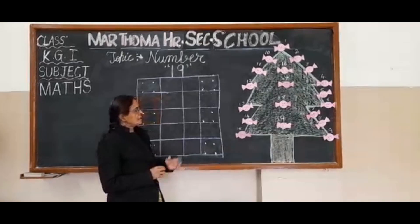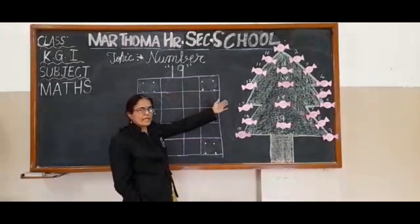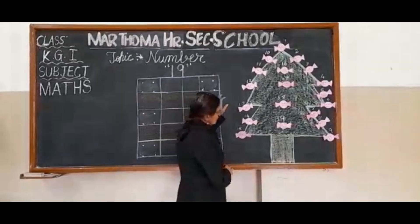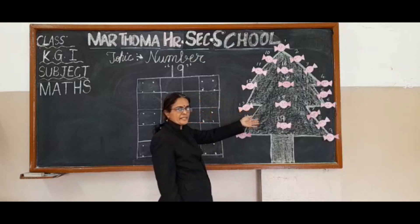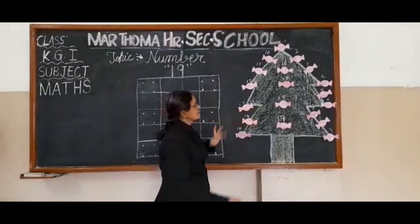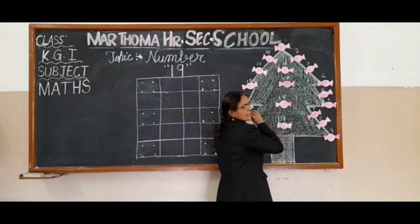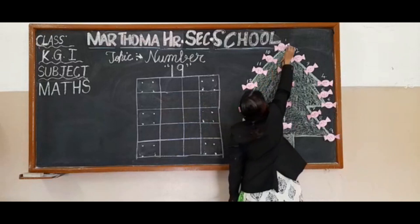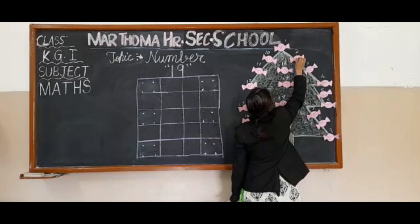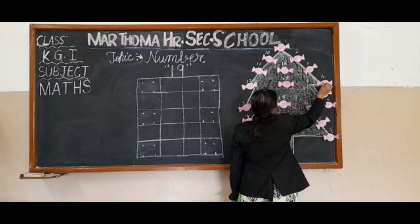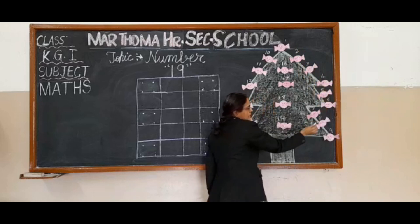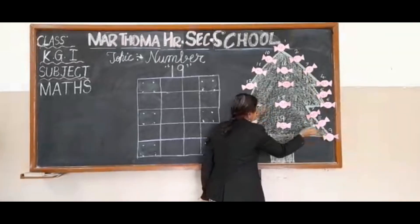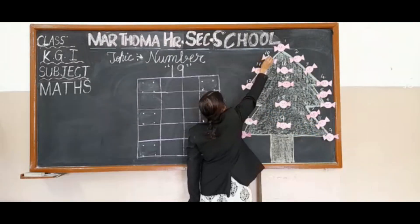Let us count these chocolates. Christmas tree is decorated with the chocolates. Let us count these. 1, 2, 3, 4, 5, 6, 7, 8, 9, 1, 0, 10.